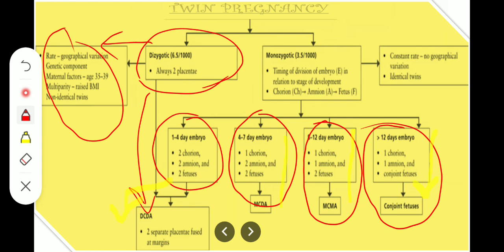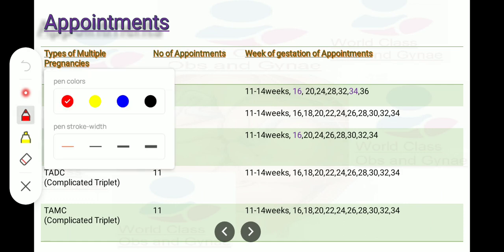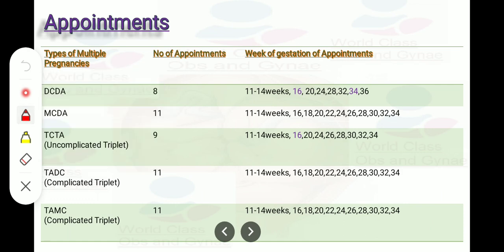Coming to the appointments: we have different types of multiple pregnancy with different numbers of appointments and gestational weeks. For dichorionic diamniotic twins, we have 8 appointments at: 11 to 14 weeks, 16, 20, 24, 28, 32, 34, and 36 weeks.